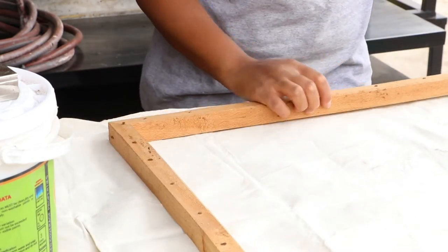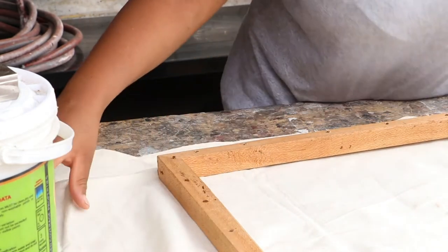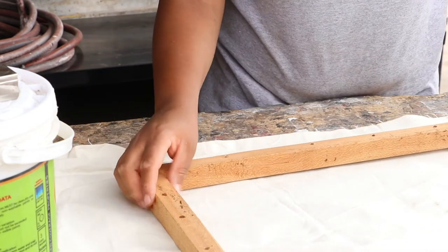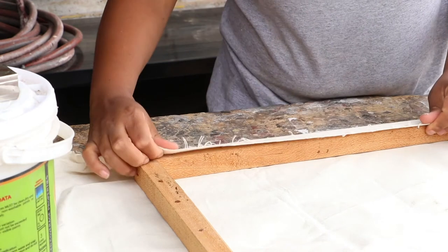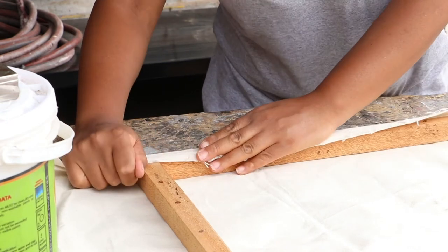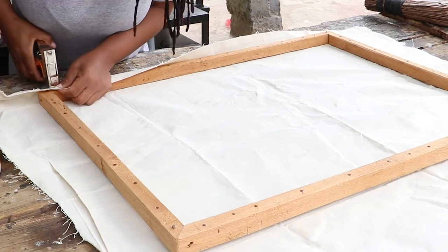I then laid my fabric on the canvas, trimmed it to size and started stapling it on the wooden frame. I kept pulling and stapling the canvas to ensure there are no folds.